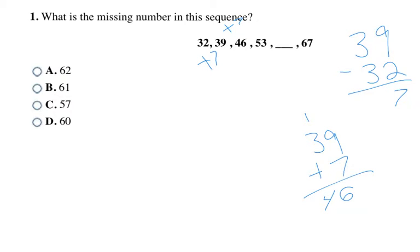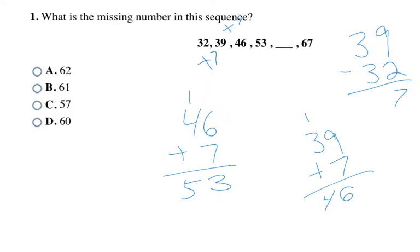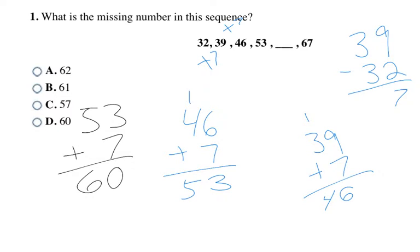It's always a good idea to check yourself. 39 plus 7 equals 46 — that checks out. 46 plus 7 equals 53 — that checks out too. So to get my answer, I take 53 plus 7, which equals 60. So D is going to be my final answer.